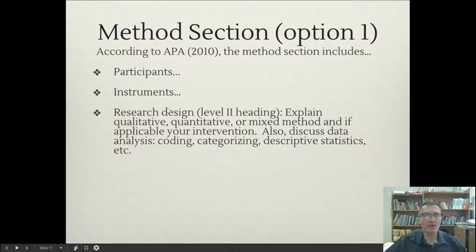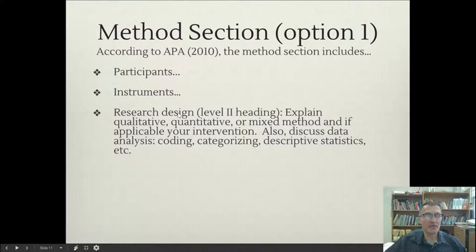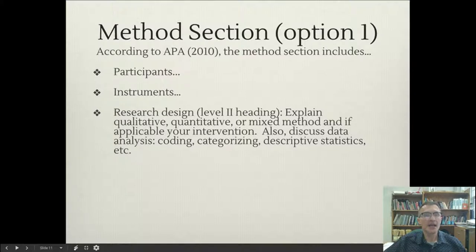In the next section under Instruments, you want to include a description — introduce the instruments that you used and describe very briefly what those instruments were. Also in parentheses, you'll want to include See Appendix C, See Appendix D, and so on, based on the instruments that you used. Some examples of instruments might include your observation sheet, any questionnaires that you used, and any interview guides that you used as well. Just the instruments themselves, not any filled-out instruments from your field notes.